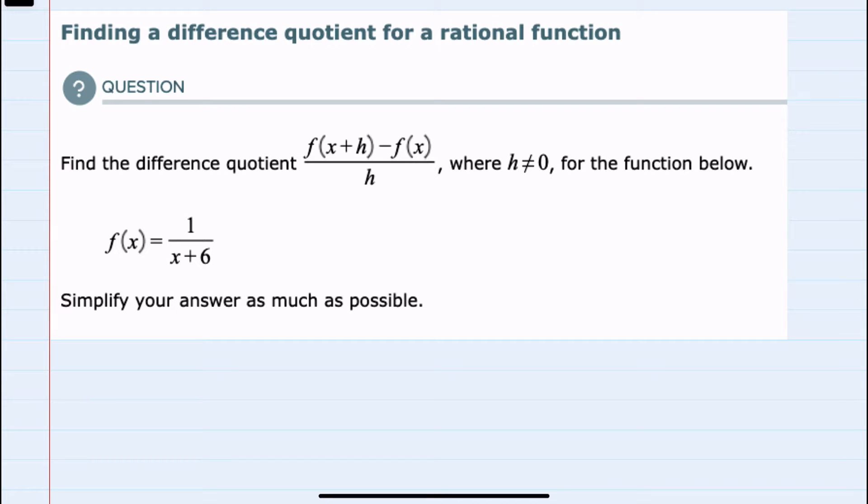The difference quotient being f of x plus h minus f of x all over h. We're given our f of x as 1 over x plus 6, so we will substitute into the difference quotient.